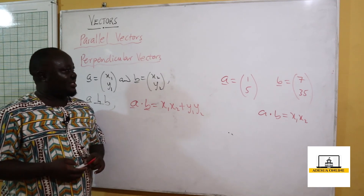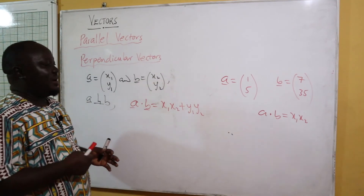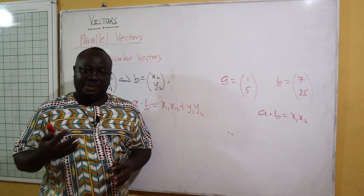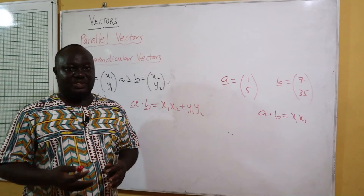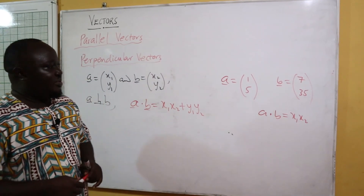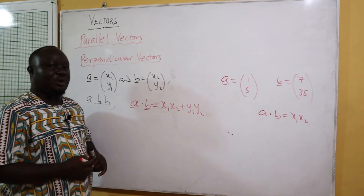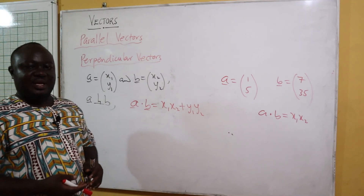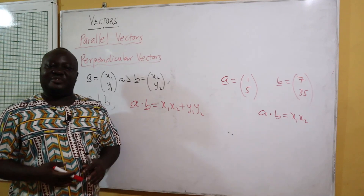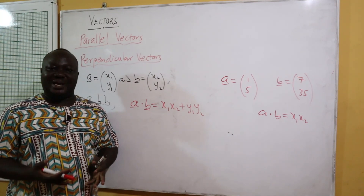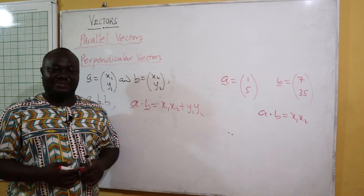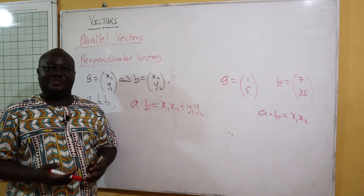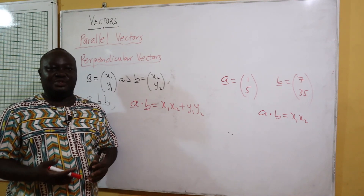We have different types of vectors: parallel vectors, perpendicular vectors, and also what we call a unit vector. A unit vector has a magnitude of 1, which is why it is called a unit vector.